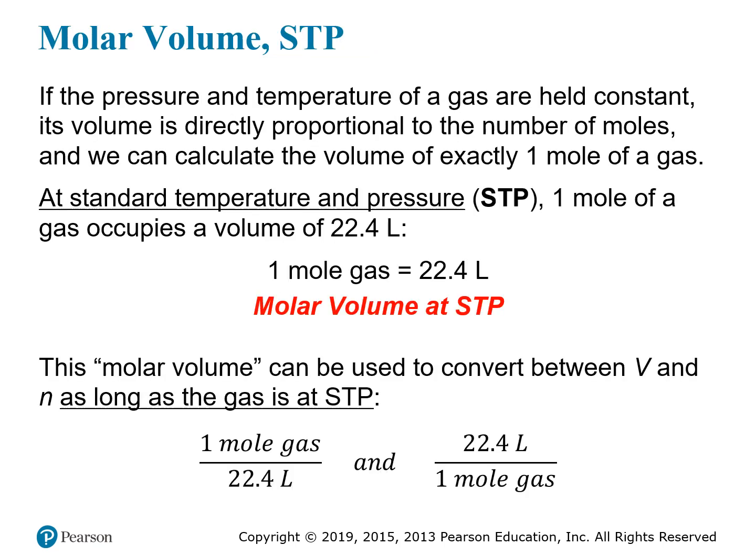Once we have pressure and temperature set, the volume is directly proportional to the number of moles, which means we can convert between the number of moles and the volume. We can measure experimentally that at standard temperature and pressure — 0 degrees Celsius and 1 atmosphere — 1 mole of gas occupies a volume of 22.4 liters. This is the molar volume of a gas at STP. It doesn't matter what the gas is; any ideal gas has the same molar volume at STP.